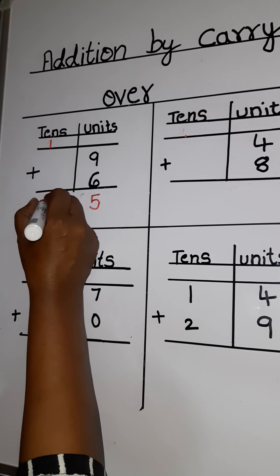Now here the problem is, you cannot write 13 under unit's place. What you have to do, you have to carry this one 10 here under 10's place.